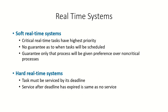Real-time systems can be of two types broadly: soft or hard. In the soft real-time system, the critical real-time tasks will have the highest priority, so any real-time process that arrives will have the highest priority. However, there is no guarantee as to when that task will be scheduled. The system only guarantees that the process will be given preference over non-critical processes — it will be given the highest priority, but no guarantee as to when it will be scheduled.